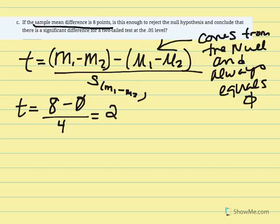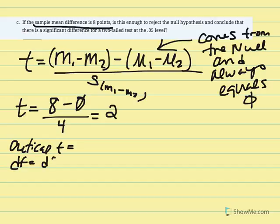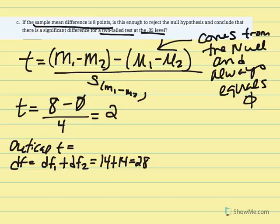So our t statistic equals 8 minus 0 over 4, which equals 2. We need to determine if that's statistically significant by finding our critical t. Degrees of freedom equals degrees of freedom 1 plus degrees of freedom 2, which is 14 plus 14, giving us 28. We're going to use a two-tailed test at alpha 5% to find our critical t in our t distribution.